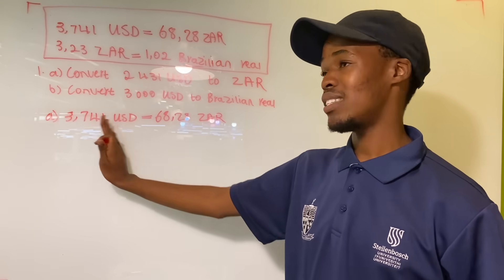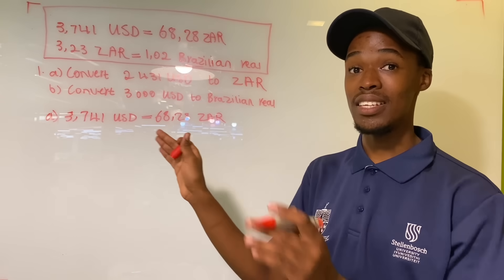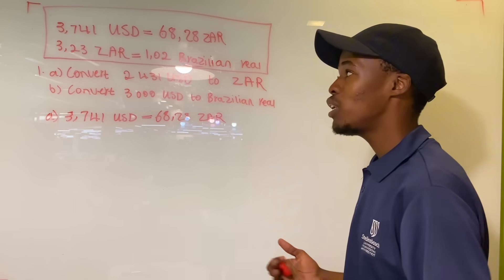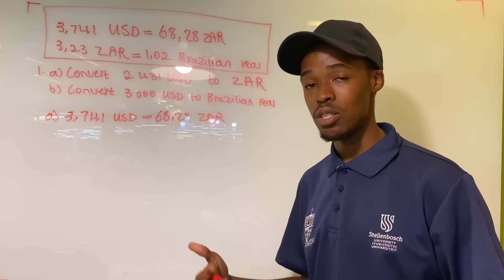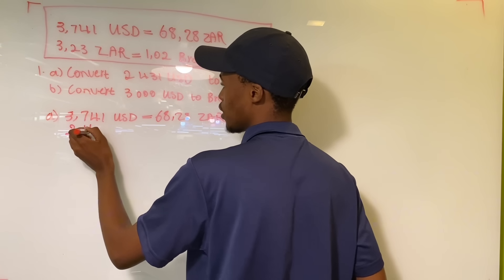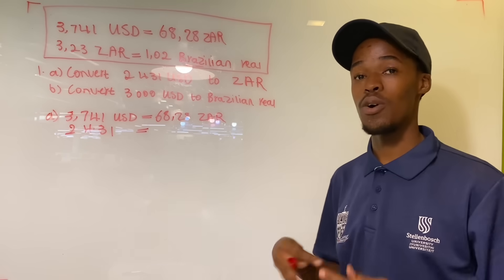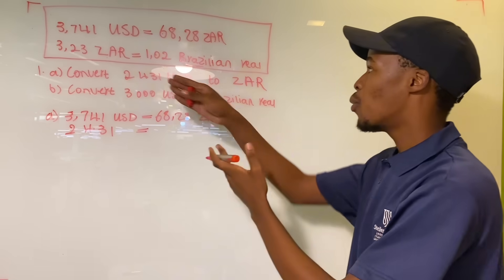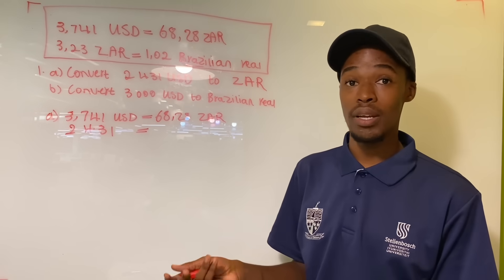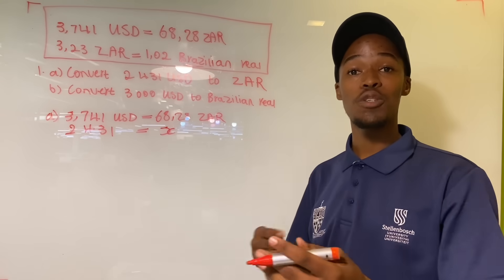What you do from here is put the same currencies on the same side, using your equal sign as the divider. On this side we have US dollars — we have 2431 US dollars from our question. On the other side we have South African rands, but we haven't been provided with any rand value because that's what we're trying to determine, so we put x there.